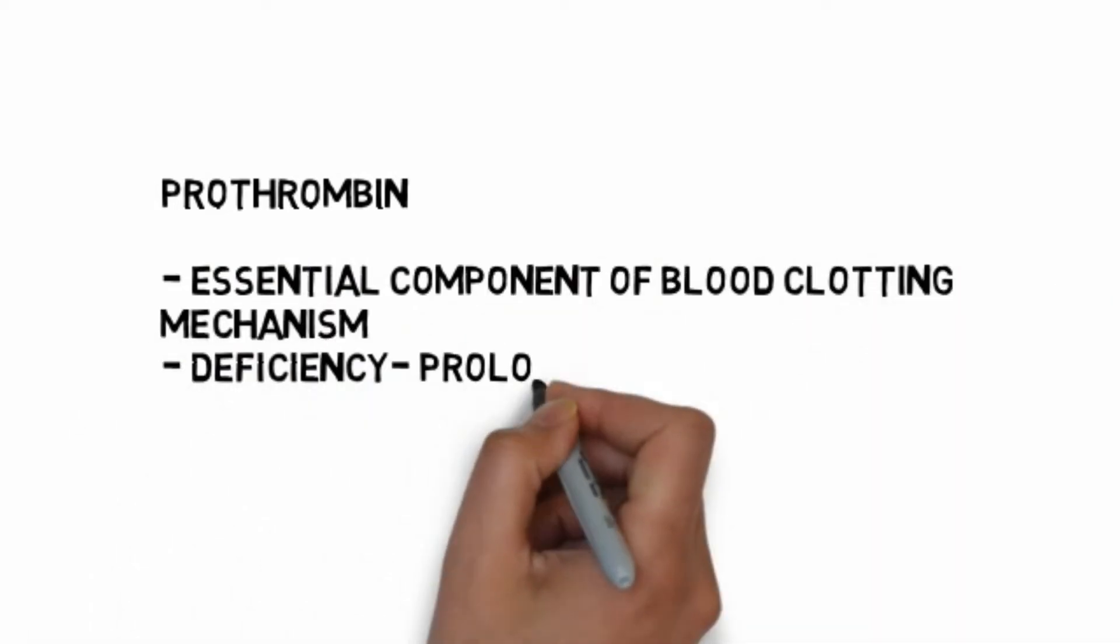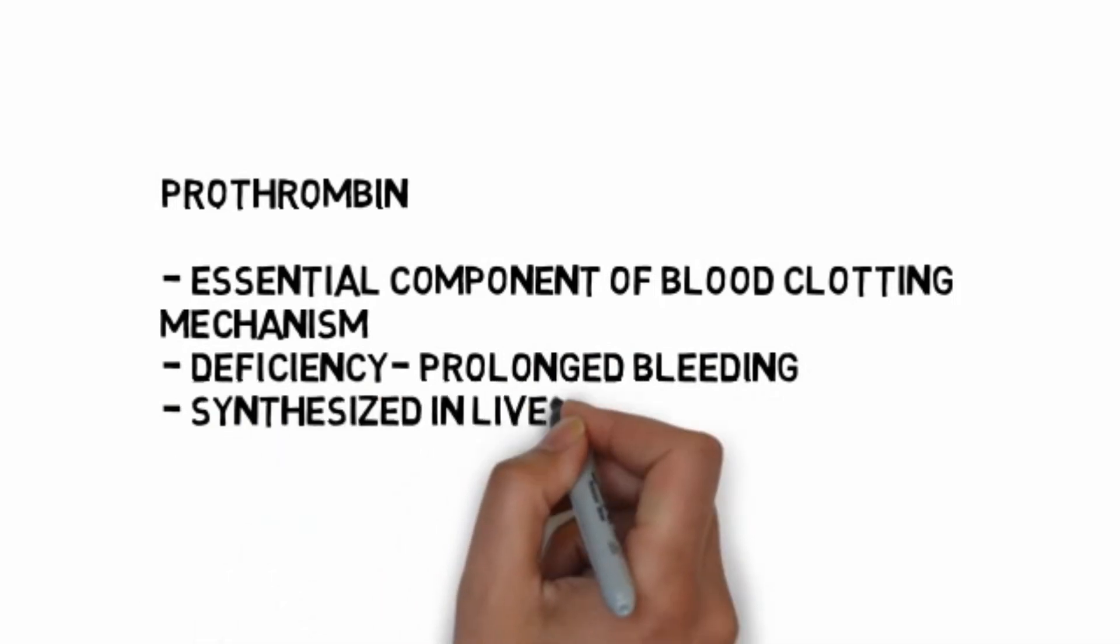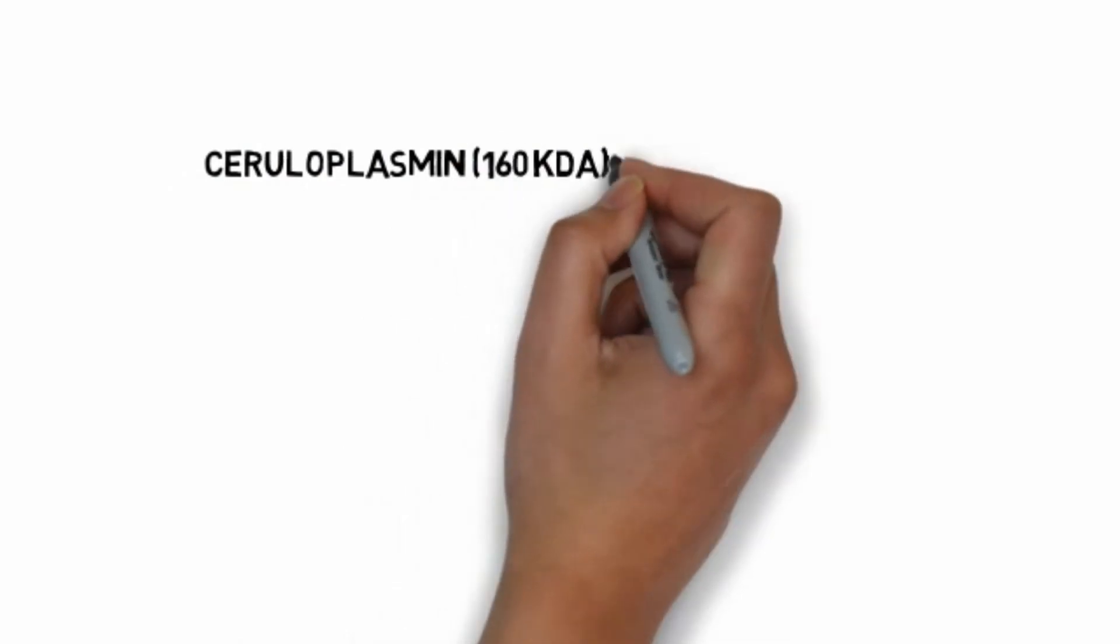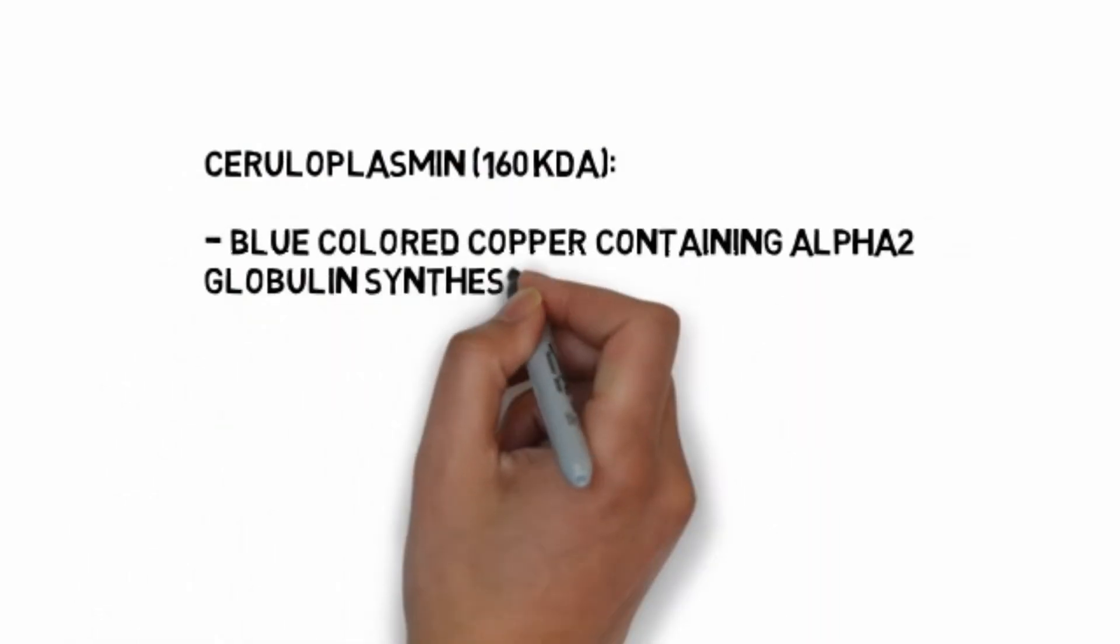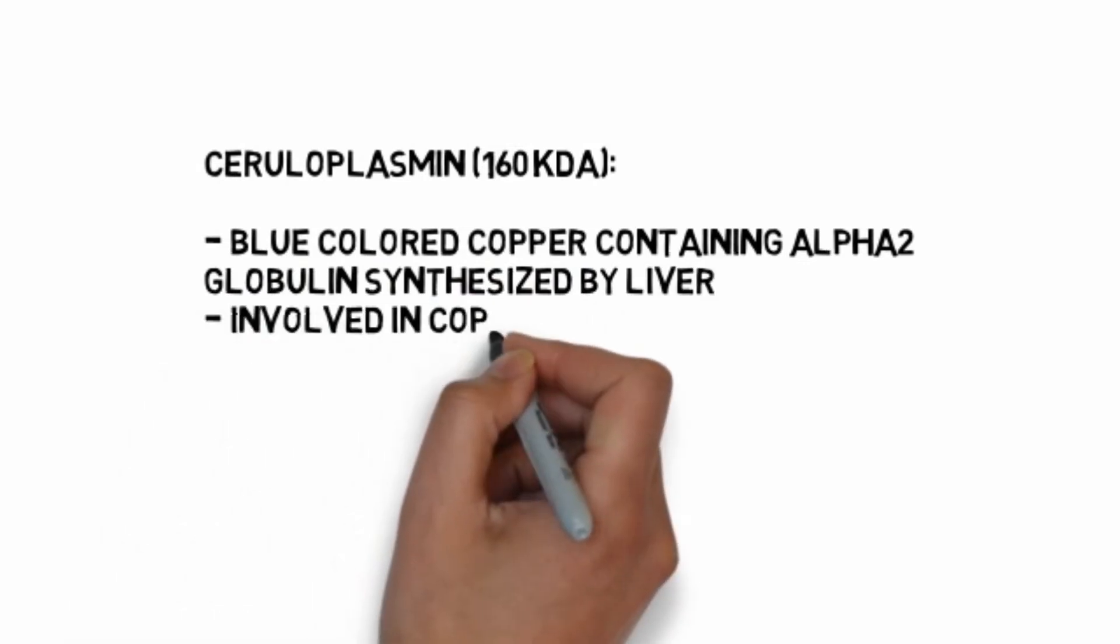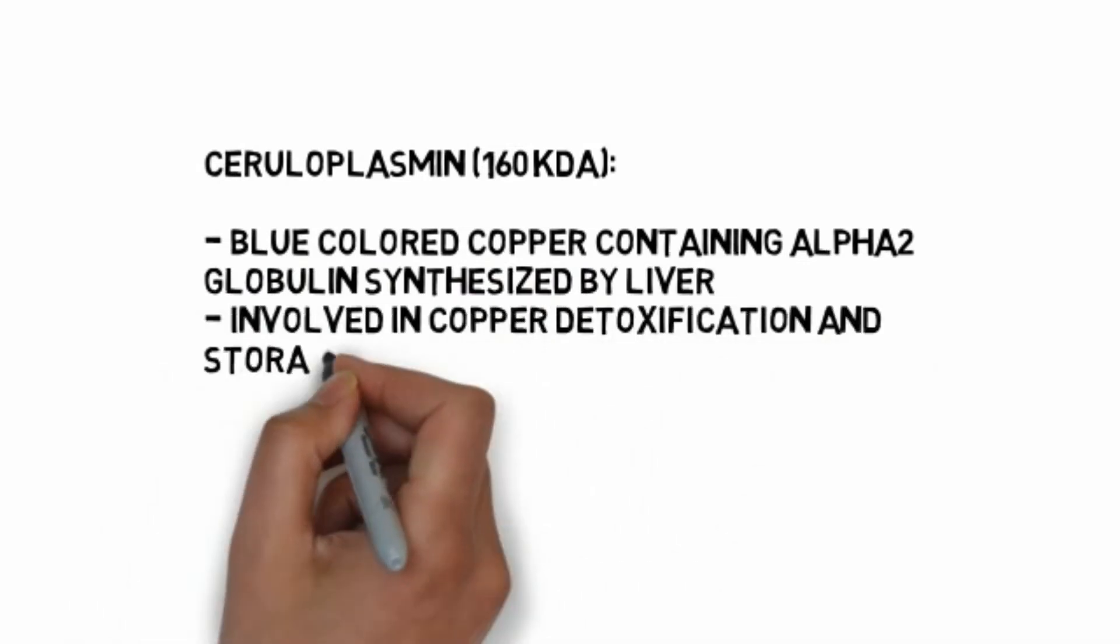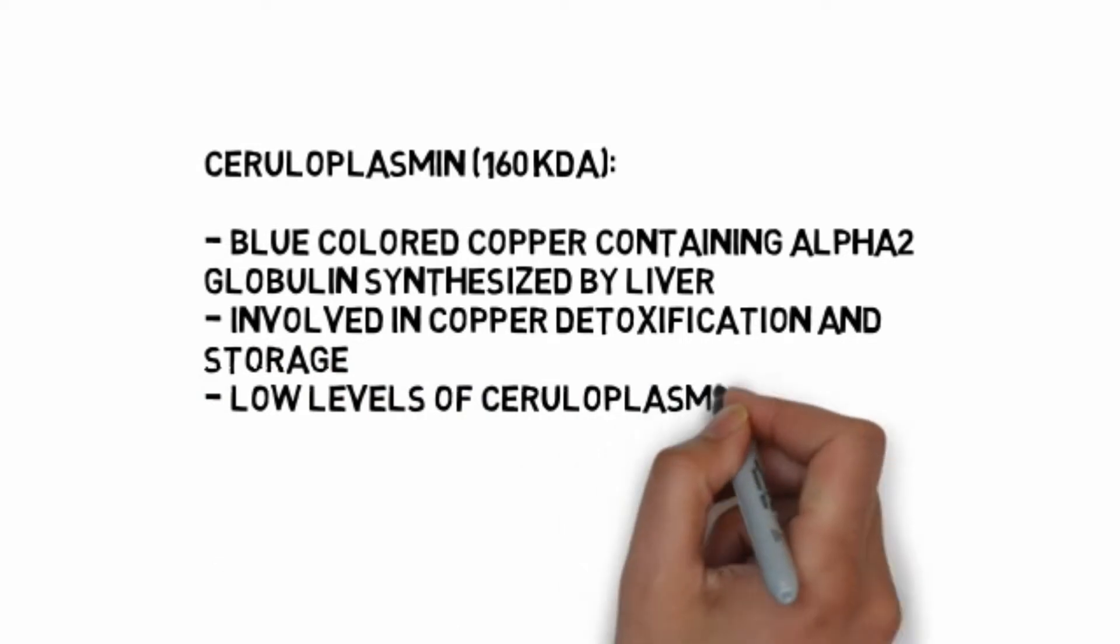Prothrombin is an essential component of blood clotting mechanism. Deficiency leads to prolonged bleeding. Synthesized in liver cells by vitamin K deficiency in adults, seen in obstructive jaundice. Ceruloplasmin, 160 kilodaltons, is a blue-colored copper-containing alpha-2 globulin synthesized by liver. Involved in copper detoxification and storage. Low levels of ceruloplasmin are associated with Wilson's disease. Normal range 25 to 50 mg per deciliter.